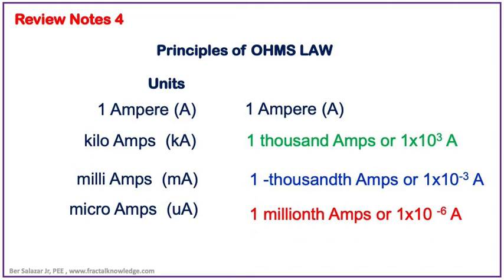You may encounter the same with currents. The rule is to convert to the base unit before performing calculations and then convert back to the desired unit. 1 kiloamp is 1,000 amps or 1 times 10 to the 3 amps. 1 milliamp is 1 times 10 to the negative 3 amps. 1 microamp is 1 times 10 to the negative 6 amperes.